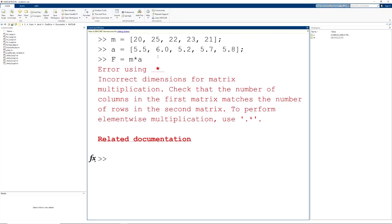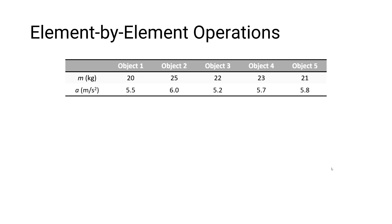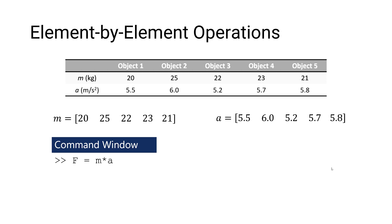We're told to check that the number of columns in the first matrix matches the number of rows in the second matrix, and to perform element-wise multiplication, use the period character followed by the multiplication symbol. Let's take a look at what's happening here. First, let's take a look at why we received an error. We set up a row vector for our mass and our acceleration, and when we tried to multiply the two row vectors together, we received an error. That is because when we use the multiplication symbol inside of MATLAB and MATLAB recognizes our variables as vectors or matrices, MATLAB believes we are trying to perform matrix multiplication.